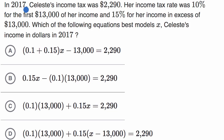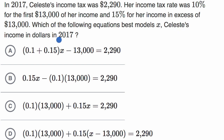We're told that in 2017, Celeste's income tax was $2,290. Her income tax rate was 10% for the first $13,000 of her income and 15% for her income in excess of $13,000. Which of the following equations best models X, Celeste's income in dollars in 2017?